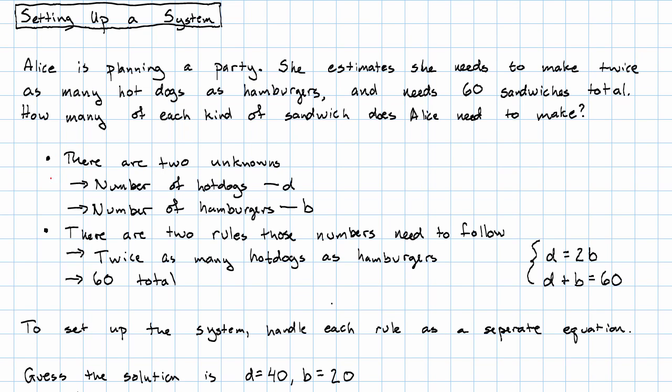We knew that this called for a system because we had two unknowns and two rules about them. We then set up one equation for each rule.